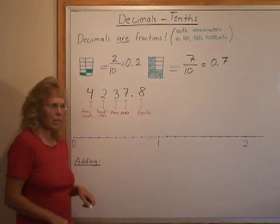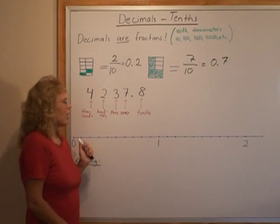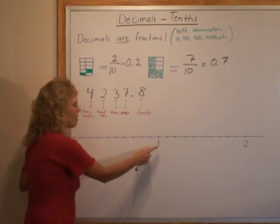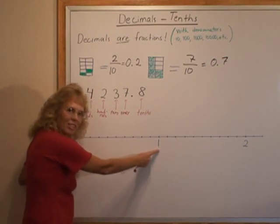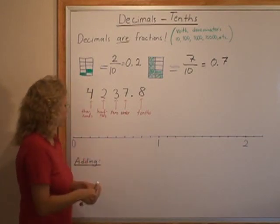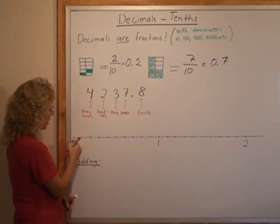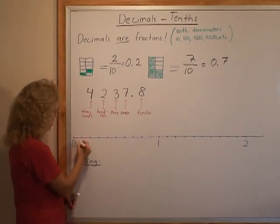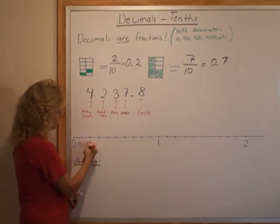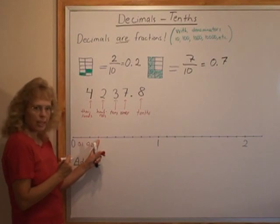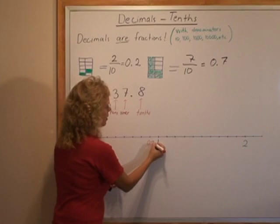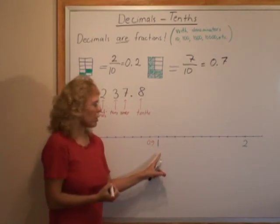Another important teaching tool is the number line. We divide the number line from zero to one into ten parts — just like this one was divided into ten parts. So this point here is at one tenth, and the decimal is written 0.1. And here we have 0.2, 0.3, and so on. Here we have 9 tenths, or 0.9.